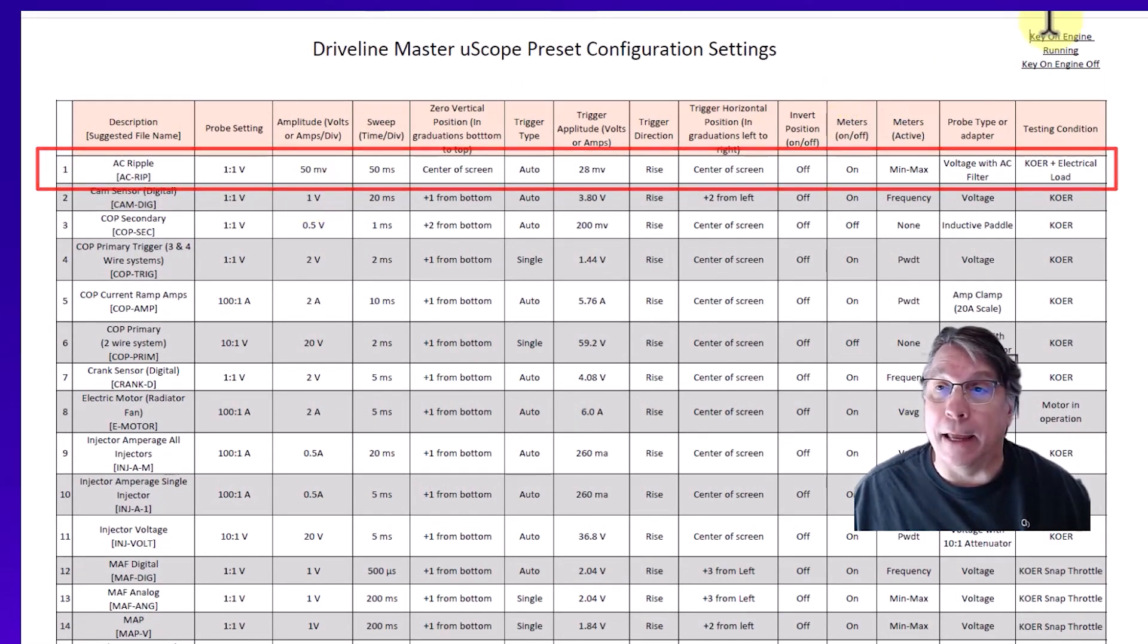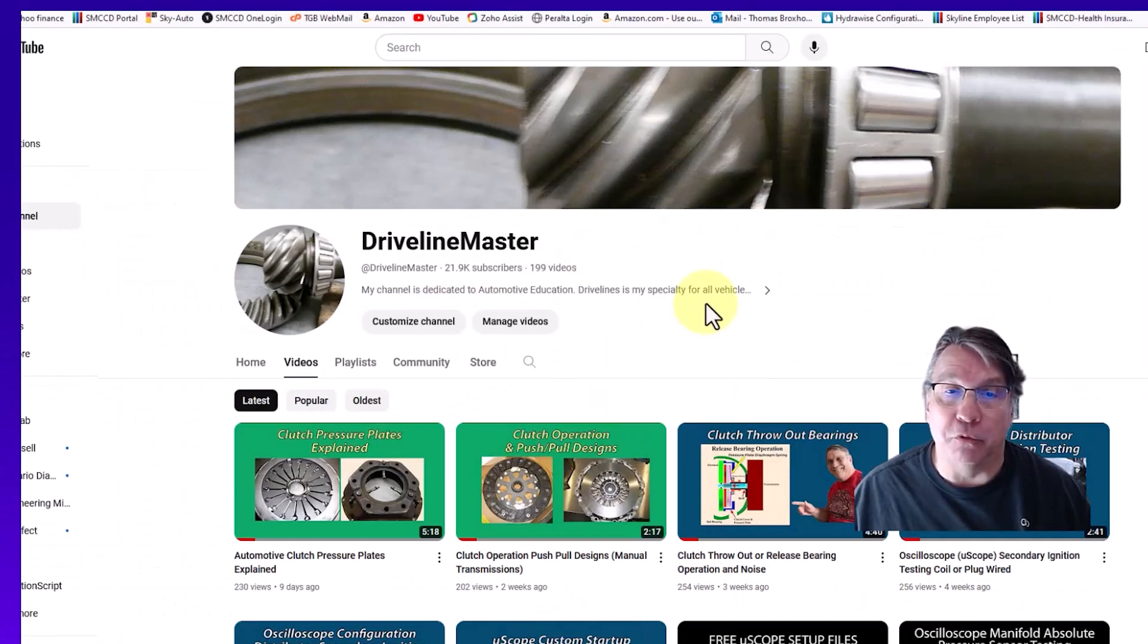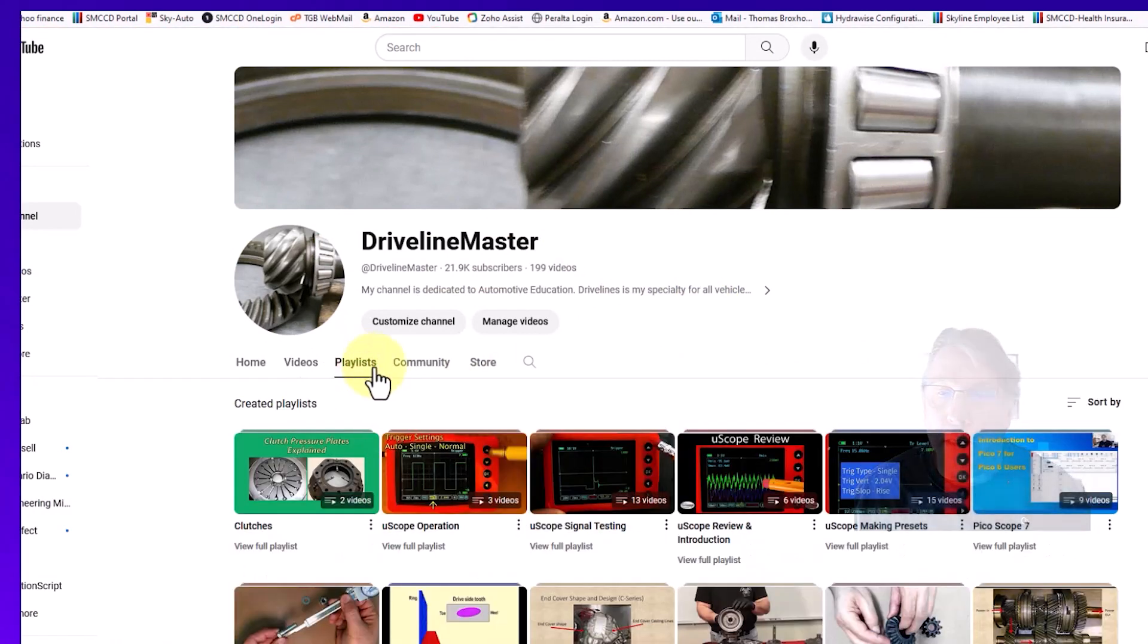In order to get this setup file, we're going to go over to my YouTube channel and you'll want to click on Playlist. In the Playlist area, you want to go over to uScope Review and Introduction.